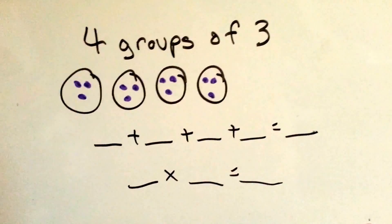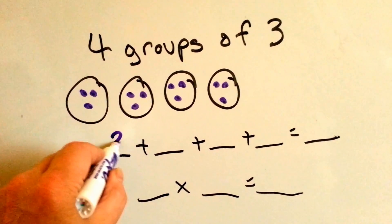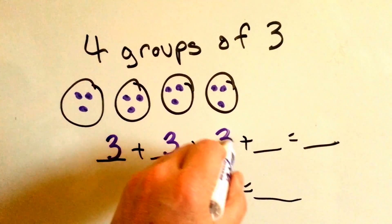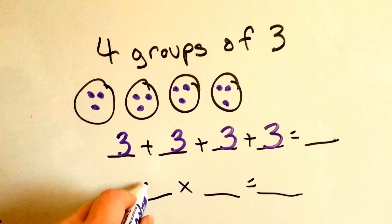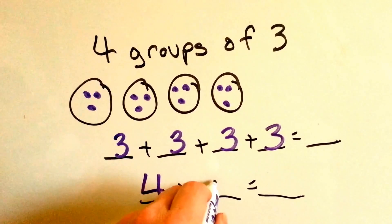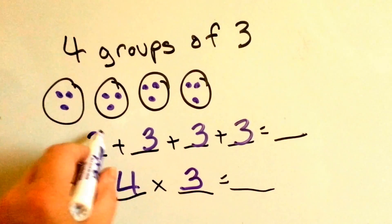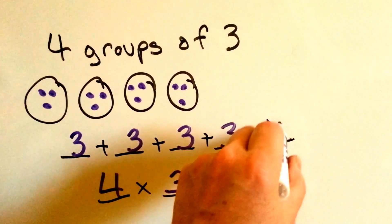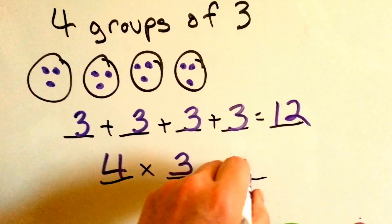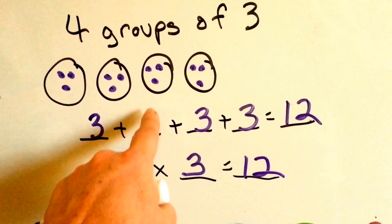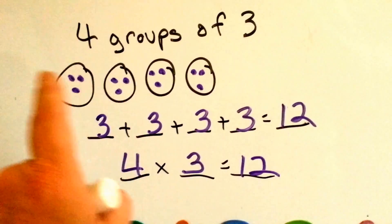4 groups of 3: 3 and 3 and 3 and 3. We have 4 times 3. 3 plus 3 plus 3 plus 3 equals 12. 4 times 3 is the same thing.